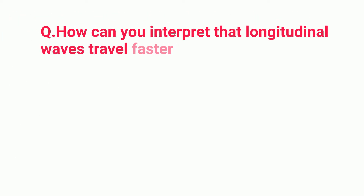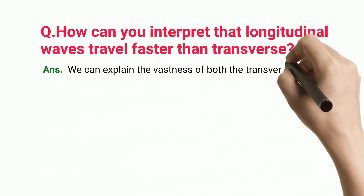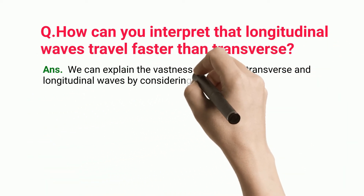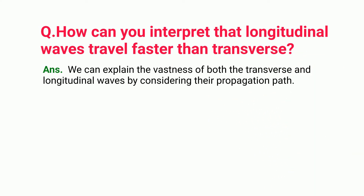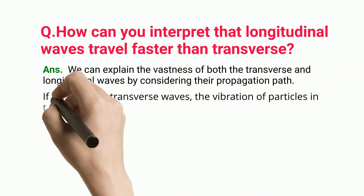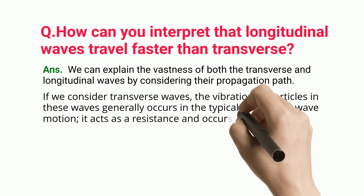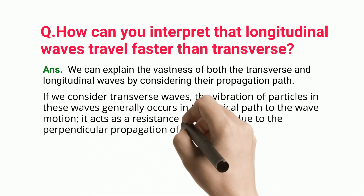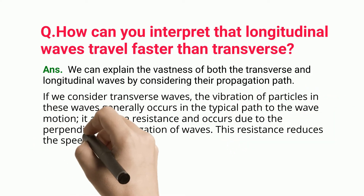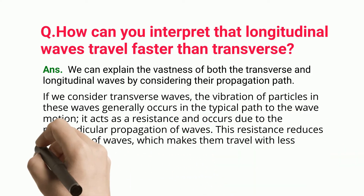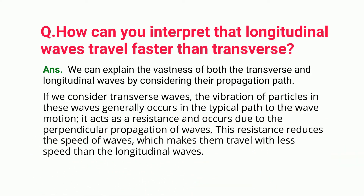How can you interpret that longitudinal waves travel faster than transverse? We can explain the difference in speed of both transverse and longitudinal waves by considering their propagation path. If we consider transverse waves, the vibration of particles generally occurs in the normal path to the wave motion, which acts as a resistance due to the perpendicular propagation of waves. This resistance reduces the speed of waves, which makes them travel with less speed than the longitudinal waves.